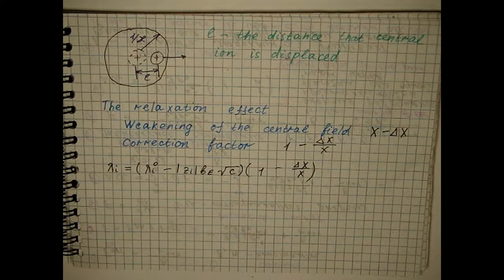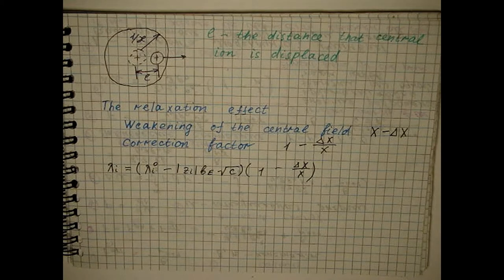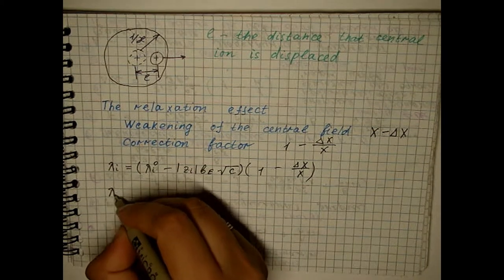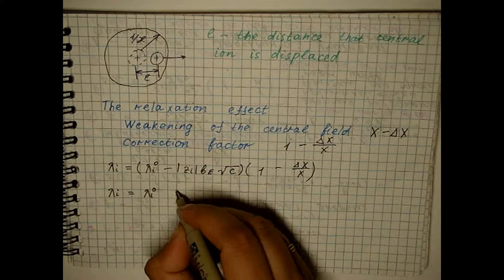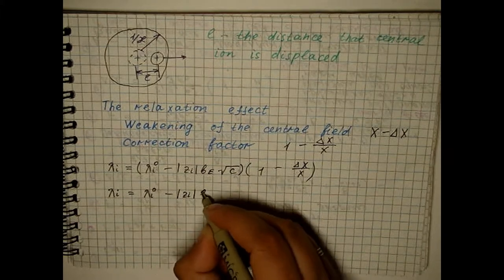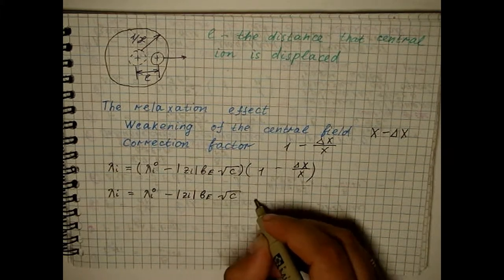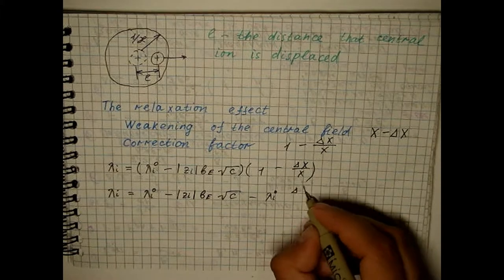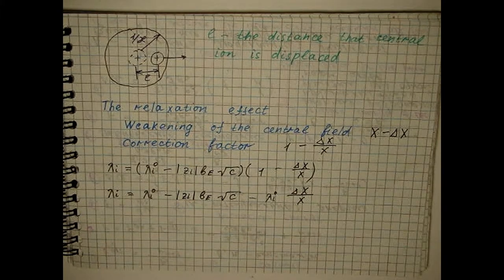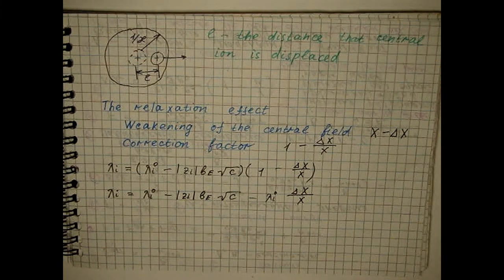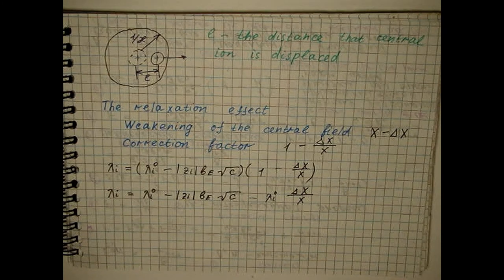In the first approximation, the influence of the field weakening on the velocity of the ionic atmosphere is neglected. So, the exact calculation of the field weakening due to the relaxation effect is very difficult.